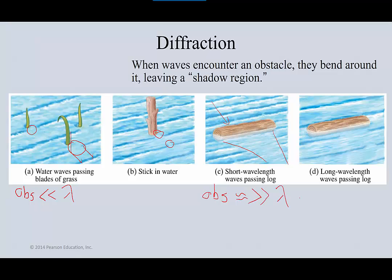With long wavelength waves passing a long log, there is still a shadow space behind it — not quite as large as with short wavelength waves, but the shadow region is still present. So diffraction occurs when there's an obstacle that wave energy can get around, and how much it bends is determined by the relationship between the size of the obstacle and the wavelength of the wave.